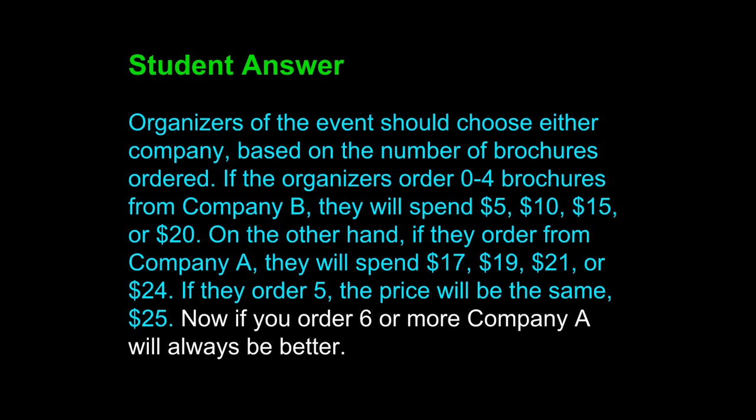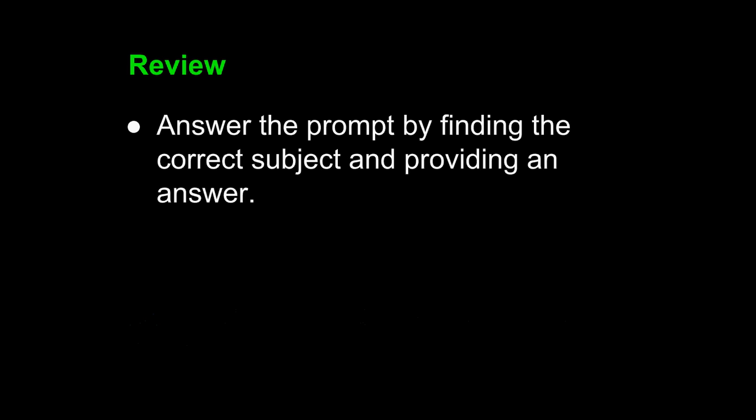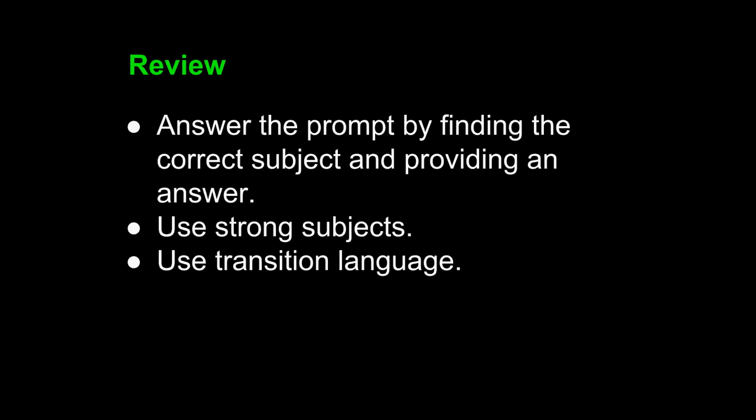If you wish to accomplish a clearly written paragraph, you will follow three steps. First, answer the prompt in the topic sentence by finding the correct subject and providing an answer. Look at the prompt carefully to understand the noun that you should use in your topic sentence, and be sure to provide a clear answer in that sentence. Use strong subjects throughout the paragraph, and use transition language to join each sentence to the next to show progression of ideas. If you can accomplish all three of these tasks, you can write a clear paragraph that will demonstrate your mathematical knowledge to your math teacher.